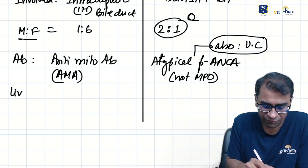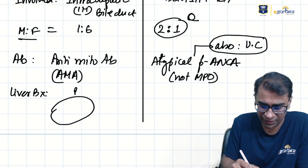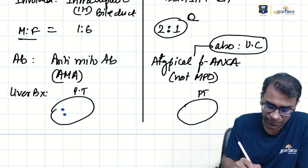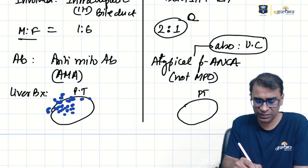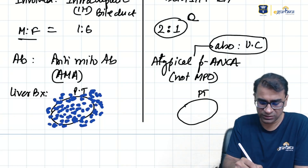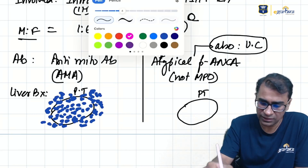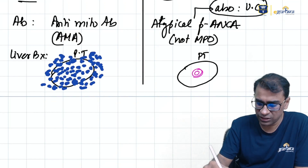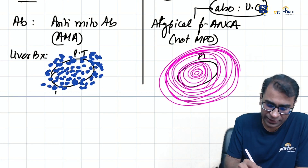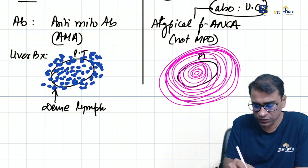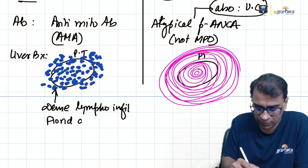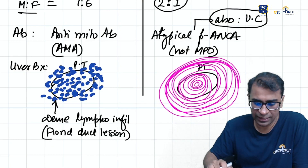On liver biopsy, in PBC a portal triad shows dense lymphocytic infiltrates in and around the bile duct. This infiltration is so dense it almost completely destroys the bile duct. These are called florid duct lesions in PBC.